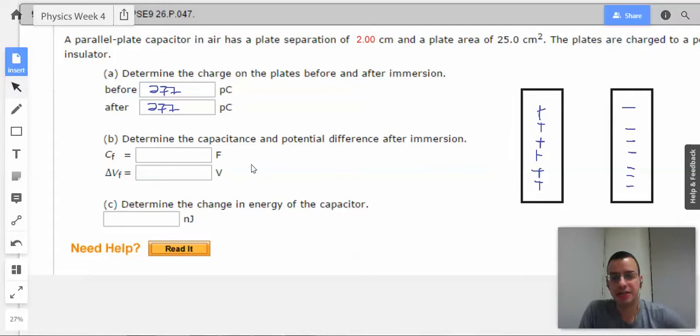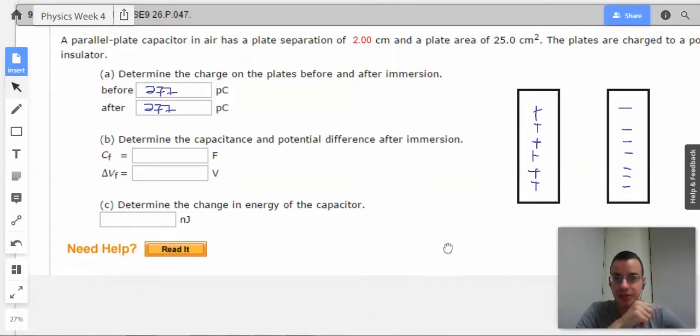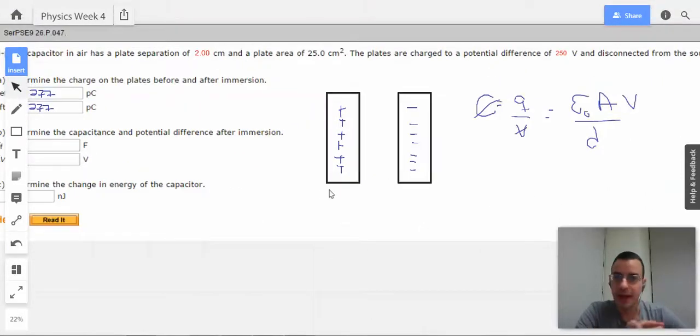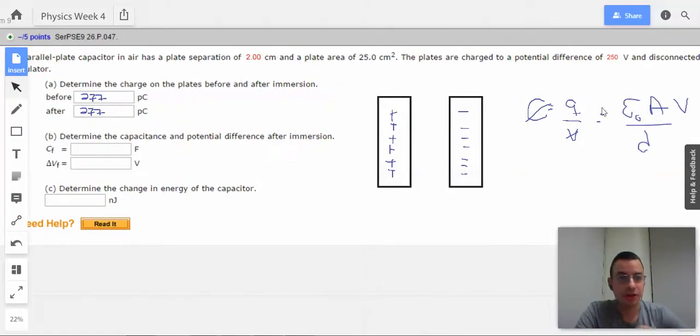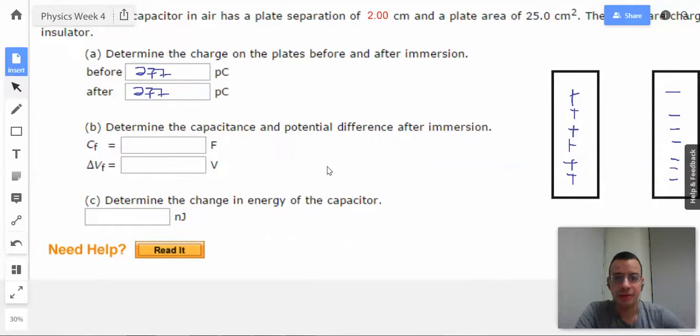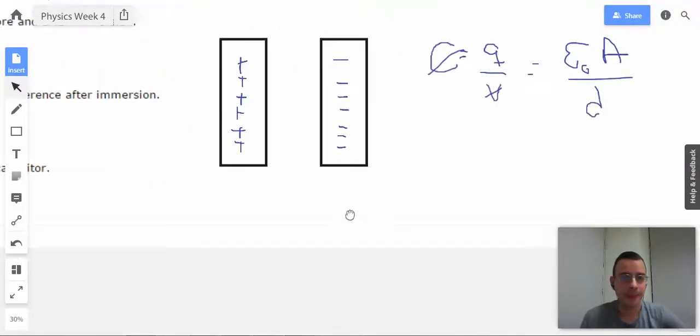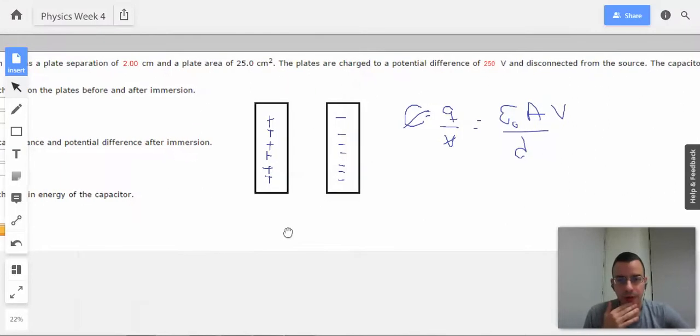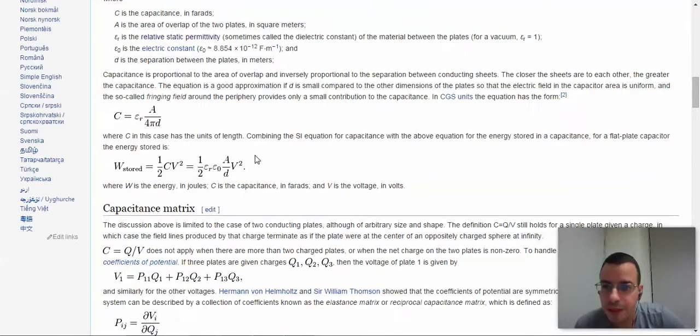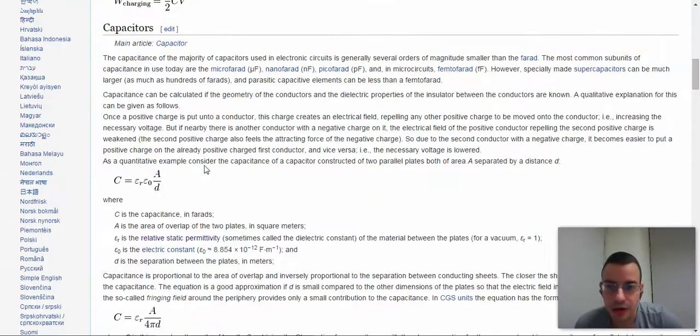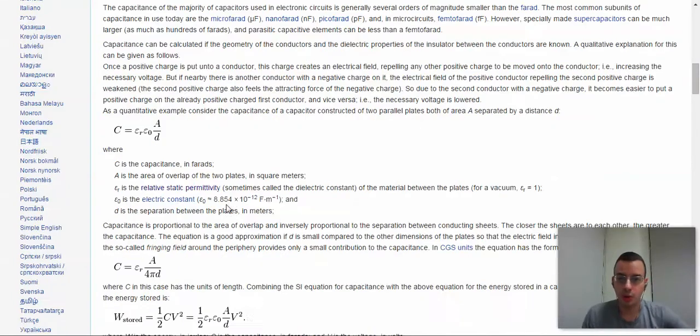So now we need to determine the capacitance and potential. The capacitance is going to change, and the potential difference will also change. Because we know the charges, we already calculated it. Now we're going to divide it by the voltage and air. What they're looking for is just the final. So we're going to use this formula right here, as a quantitative example.